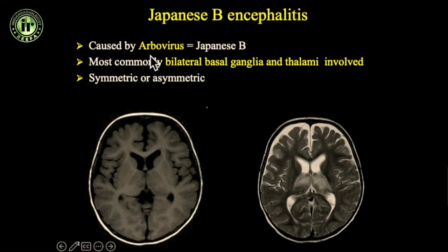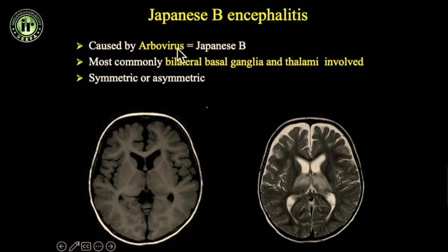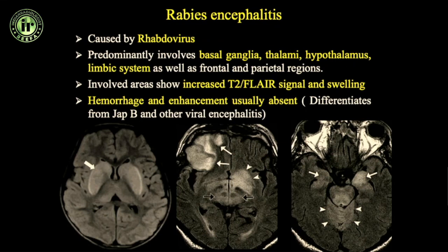Compared to that, Japanese encephalitis (JE), which is caused by an arbovirus, has central involvement — you get involvement of the thalamus and basal ganglia. Most of them are symmetric. There is an association of neurocysticercosis with JE because of co-endemicity, and in those cases the larger affection is on the side where the cysticercosis lesion is present.